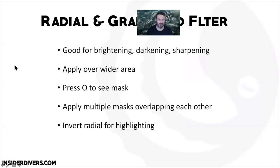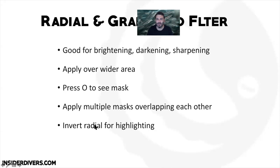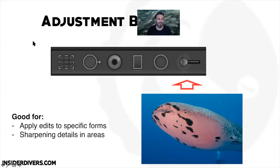To summarize: radial and gradient filters are good for brightening, darkening, and sharpening applied to a wide area rather than something specific — the brush filter that we'll do now is for a specific area. Remember you can apply multiple masks on top of each other overlapping to create a total combined effect. Inverted is for highlighting the subject; not inverted is for highlighting everything outside.